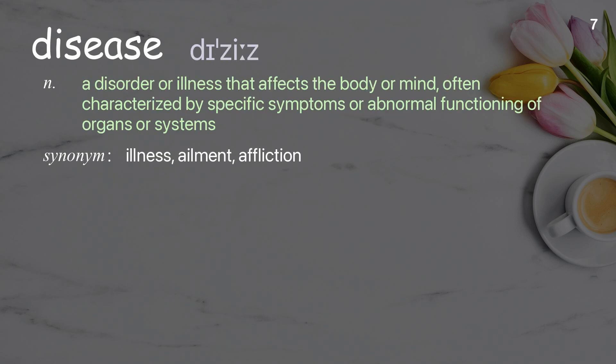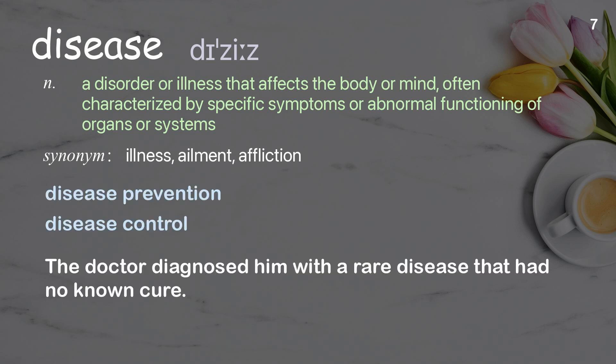Disease: a disorder or illness that affects the body or mind, often characterized by specific symptoms or abnormal functioning of organs or systems. Examples: disease prevention, disease control. The doctor diagnosed him with a rare disease that had no known cure.